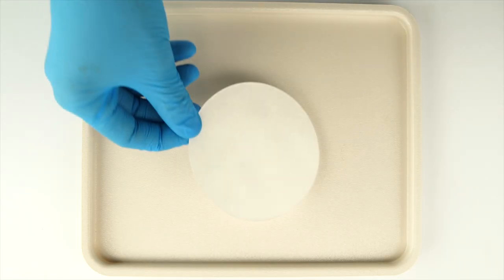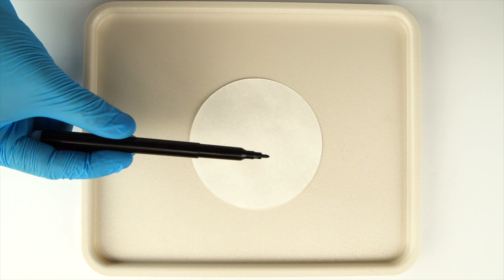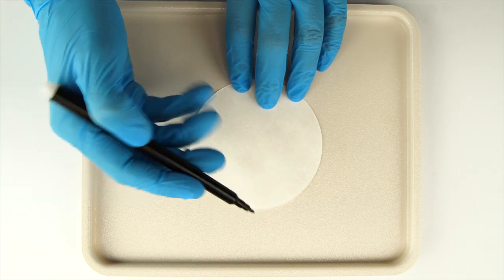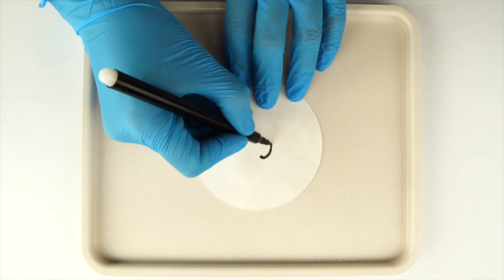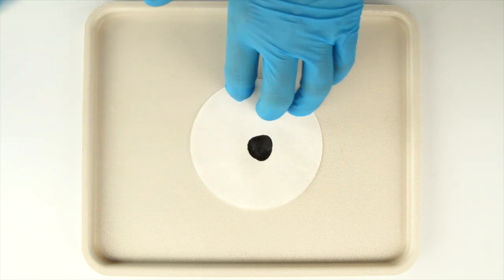First, take a piece of filter paper. Using the marker, draw and color in a small circle on the filter paper. Make the circle about one centimeter, a bit less than half an inch in diameter.